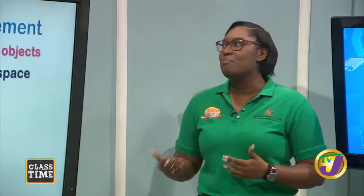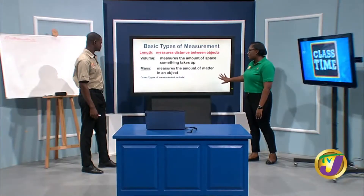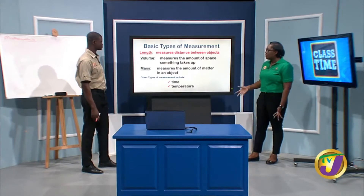The basic types of measurements we want to look at are: length, which measures the distance between objects; volume, which measures the amount of space something takes up; and mass, which measures the amount of matter in an object. There are also other types of measurements such as time and temperature.